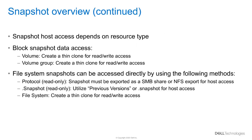It's important to note that all snapshots are read-only. If an administrator would like to have access to a snapshot, there are a few things to be aware of. For block storage resources such as volumes and volume groups, a thin clone must be created based on the parent resource for host access. As for file system snapshots, they can be accessed by using the following methods. If the snapshot is a protocol snapshot, it can be exported as an SMB or NFS share for host access.